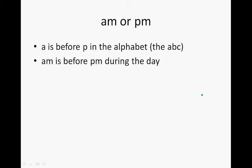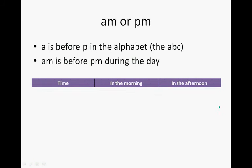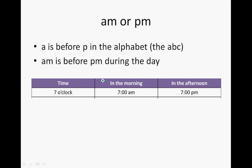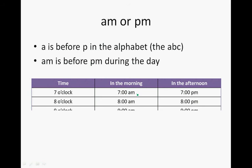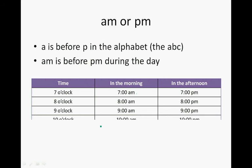AM is in the morning, PM is in the afternoon. So when we look at different times, we have a table with a column for time in the morning and in the afternoon. So 7 o'clock in the morning is 7 AM and in the afternoon it is 7 PM. 10 o'clock in the morning is 10 AM and in the afternoon 10 PM.